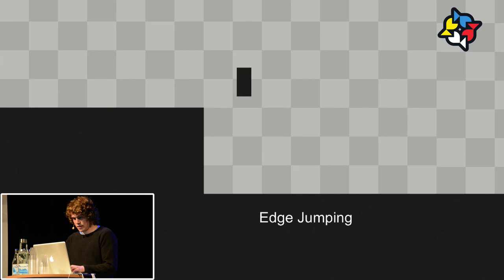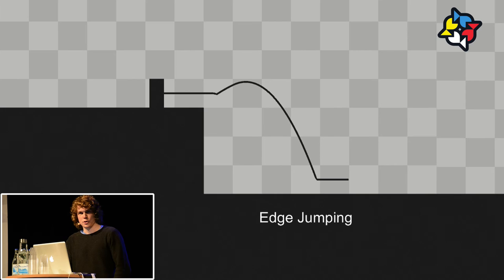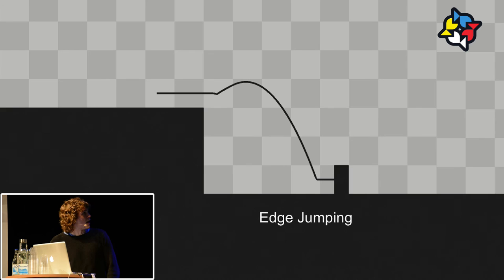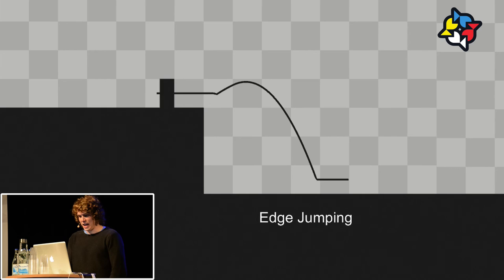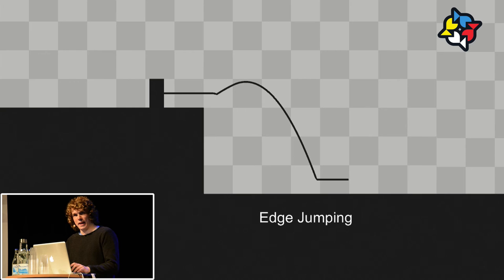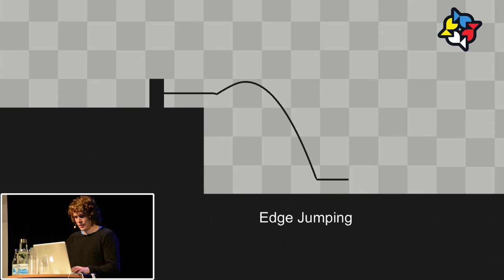A small but important detail: the edge jump, or coyote time — jumping after you've actually left the platform. In Limbo, there's a timer of about 0.08 seconds after leaving the platform where you can still jump as if you're still standing on it. This is an advantage for forgiveness — if a player tries to time a jump right at the edge and is one pixel off, this buffer prevents an unfair fall. Mario and Meat Boy don't have this — they just let you fall.